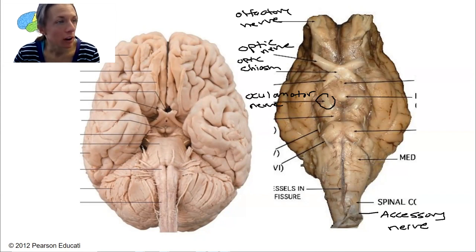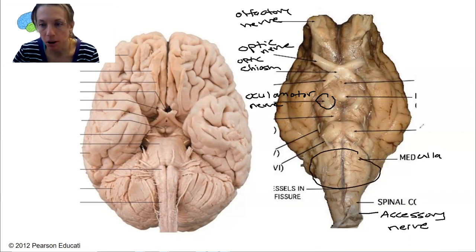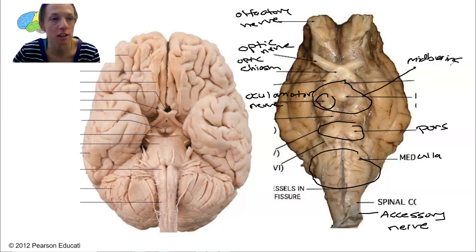Ventral side, we've got medulla, pons, and midbrain. So let's do those. Medulla — this big thing right here. We've got the pons right here, this pond-shaped thing. And then this entire structure is our midbrain, where the oculomotor nerve originates from.